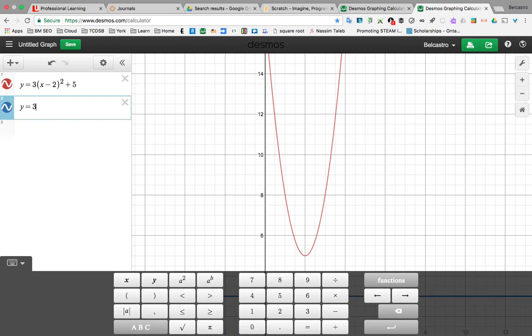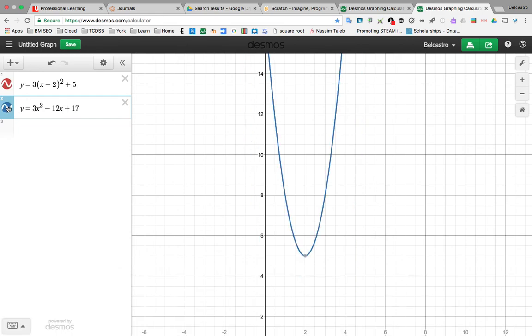And here we have 3, negative 12, 17. So Y equals 3X squared, negative 12X plus 17. And if I turn the blue off, it's the exact same. So these are the exact same equation. Okay. Just one is in the vertex form and one is in standard form.